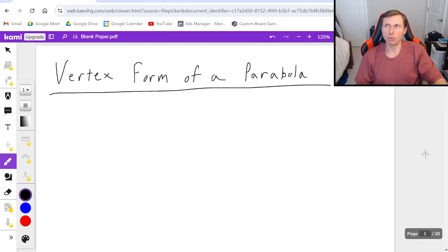So I guess first we should talk about what vertex form looks like, which would be this equation here. Y equals a times x minus h squared plus k.